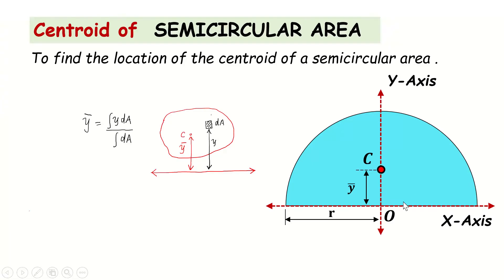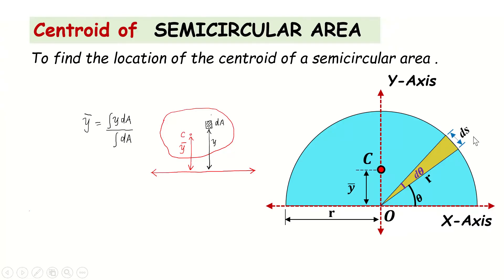We require a small area dA from this semicircular area. To maintain the geometry, I will consider a small area in the form of a sector. The location of this sector is at angle θ with respect to the x-axis, and the angle of the sector is very small — that is dθ, an infinitesimally small angle. The radius of the sector is r, and the length of the arc is ds. Since dθ is very small, ds is also infinitesimally small.